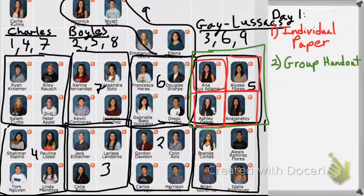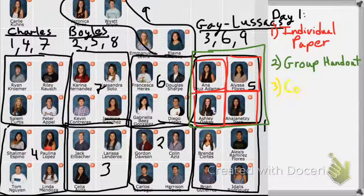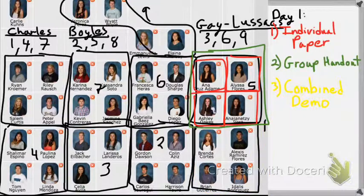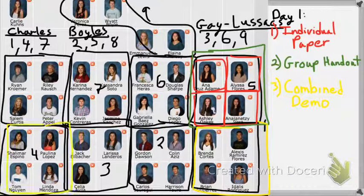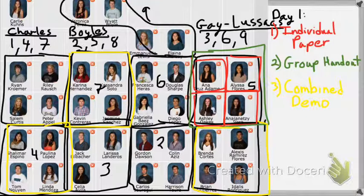This applies to everyone — I'm just using their group as an example. The final thing you'll need to do today is, if there is time, you will create a combined demonstration. So that means everyone who has Charles' Law — Family one, Family four, and Family seven — will work together to create a demonstration that will show Charles' Law.